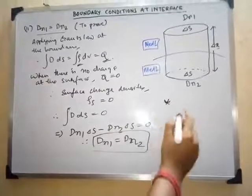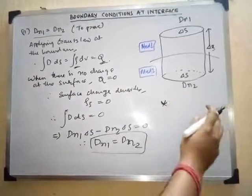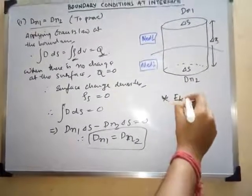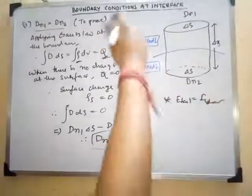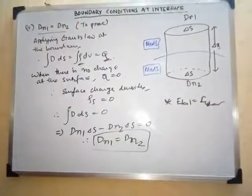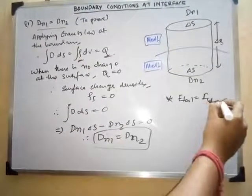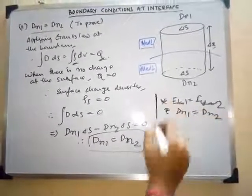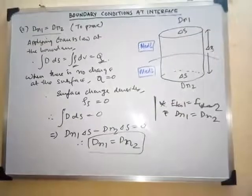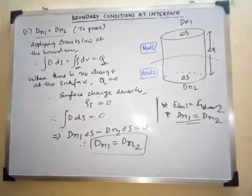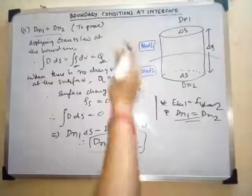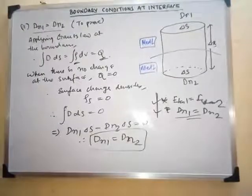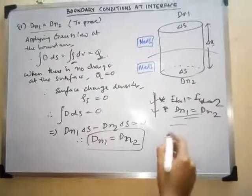Sometimes they ask you to only write the boundary conditions for electric field. In that case, you write: E_tan1 = E_tan2 and D_N1 = D_N2. These are the two boundary conditions related to electric fields. If they ask only to write them, write just these two. If they ask to prove them, use the proofs we have done. Similar boundary conditions also exist for the magnetic field: H_tan1 = H_tan2.